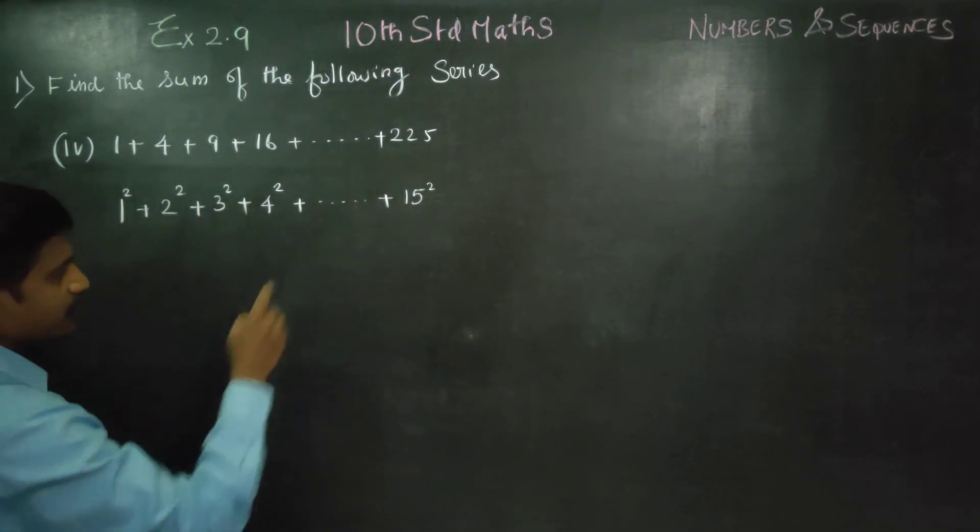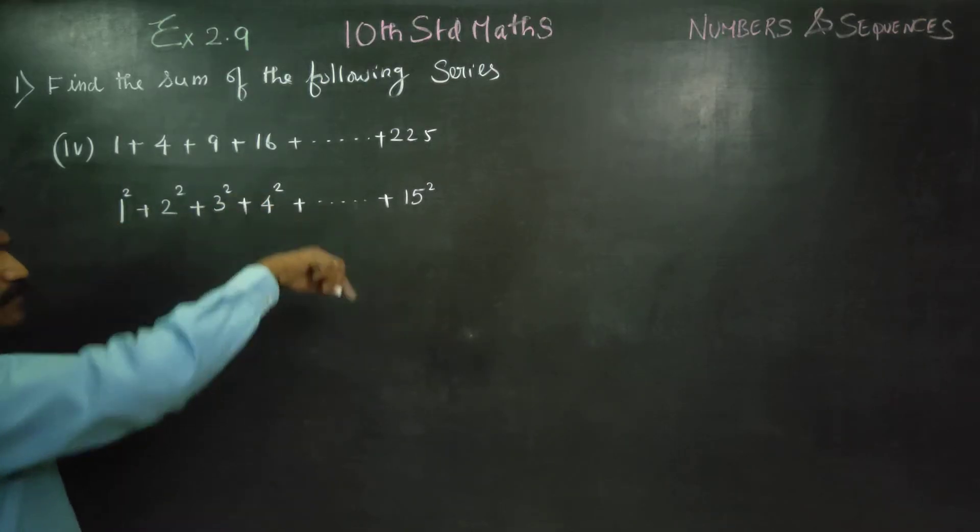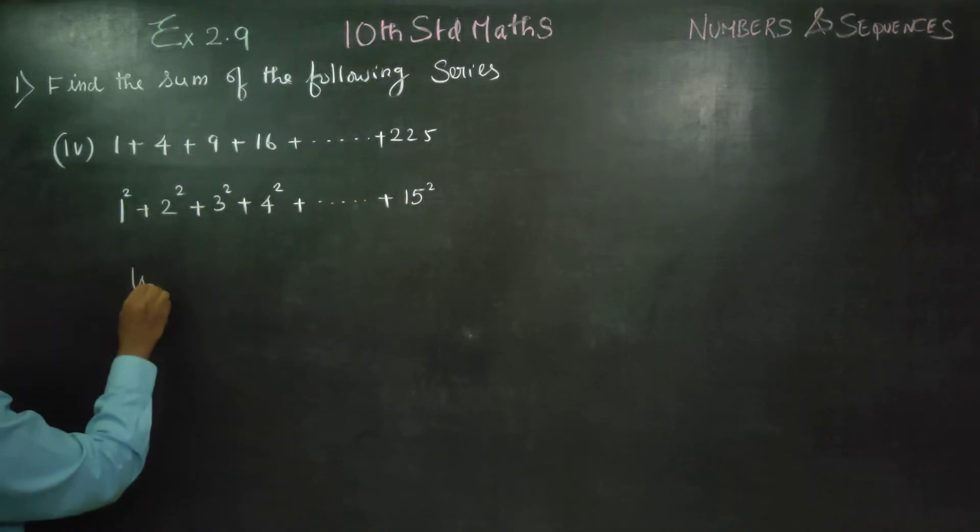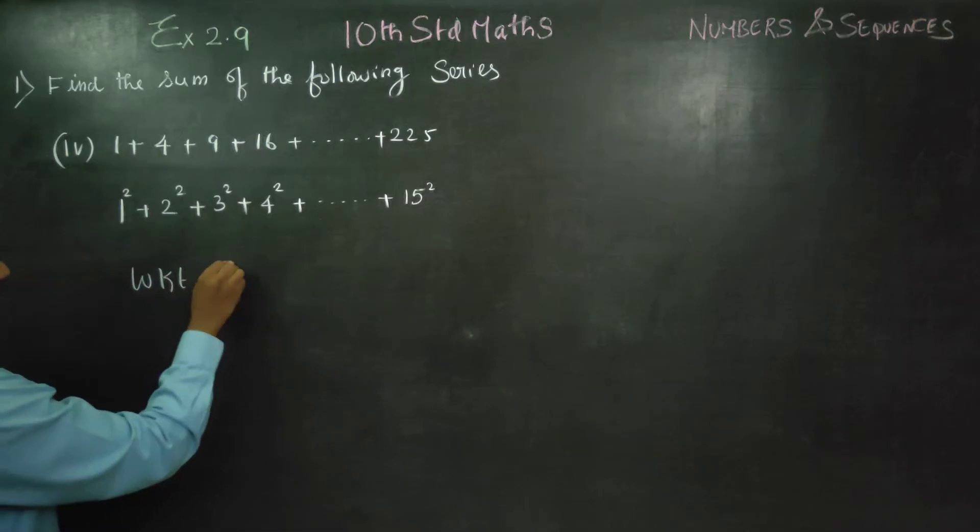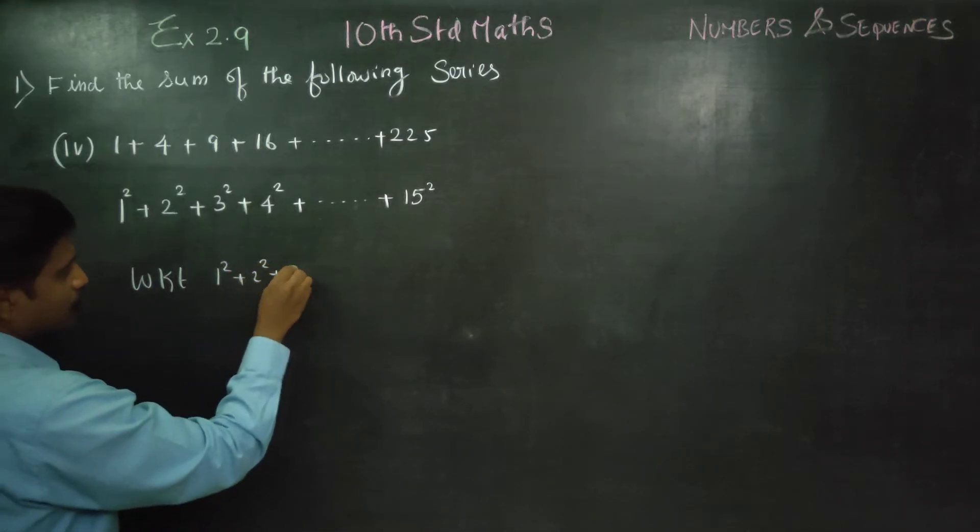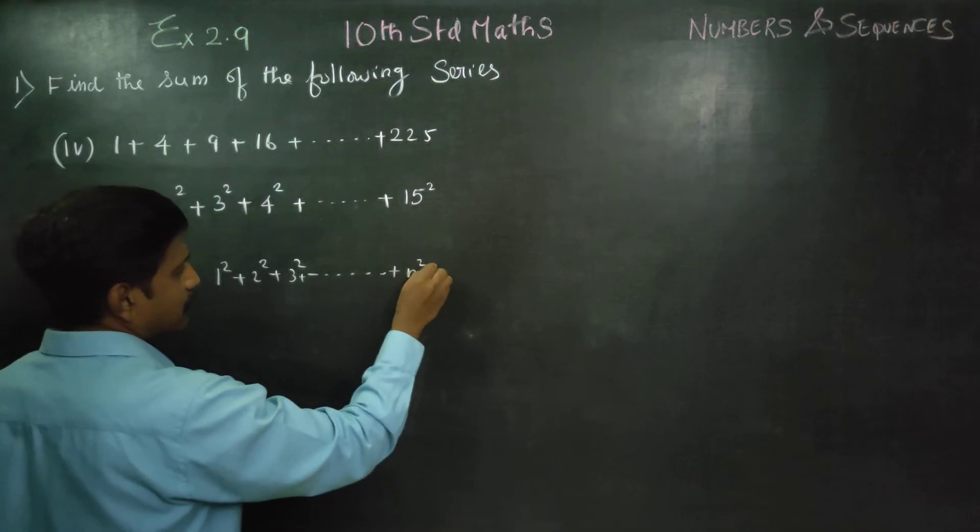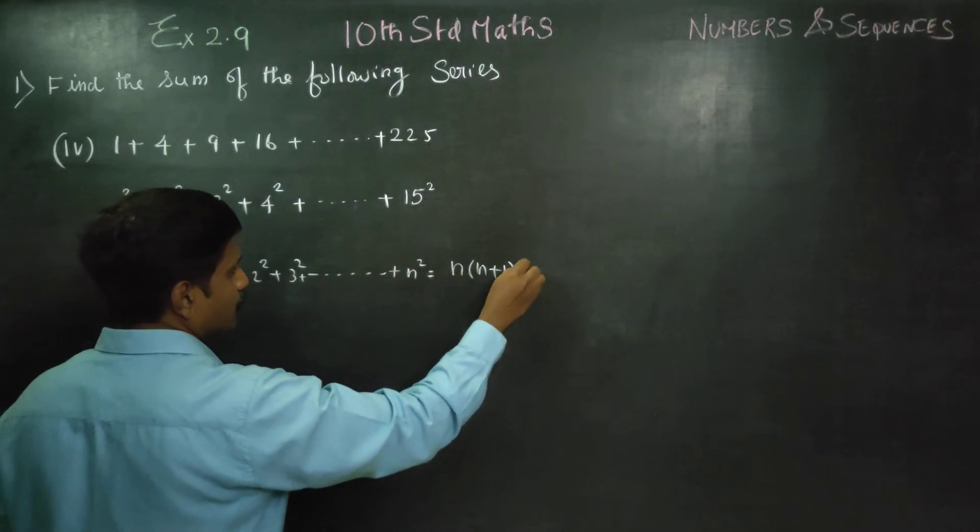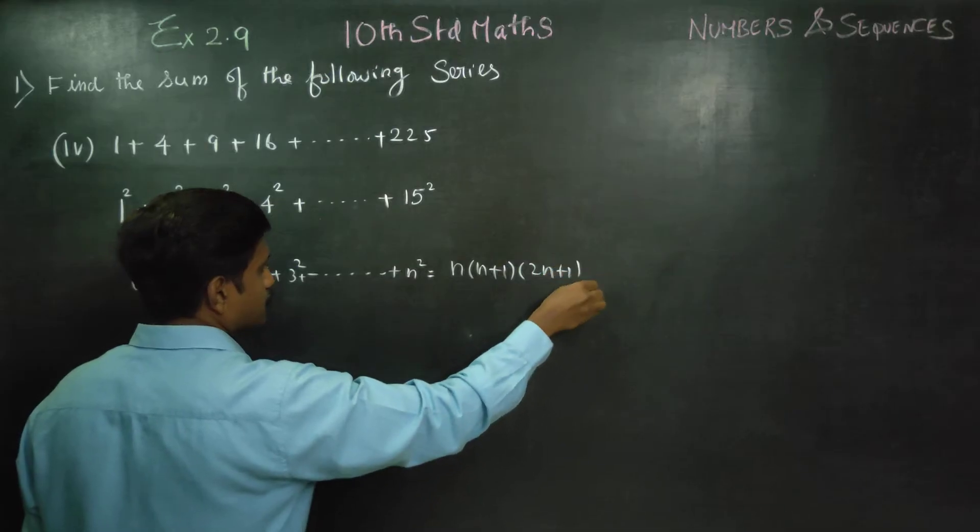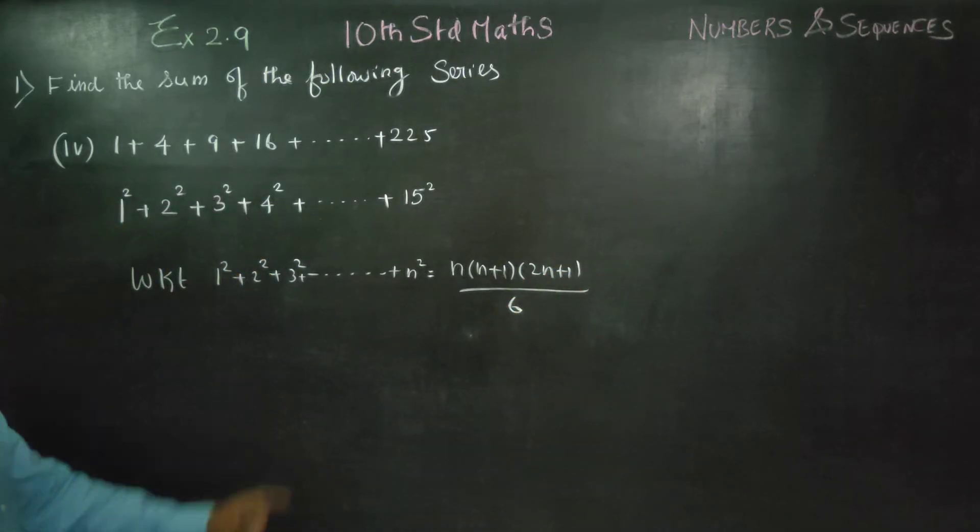Sum of natural numbers - sum of the squares of the natural numbers. We know that 1 squared plus 2 squared plus 3 squared dot dot dot up to n squared, this is the formula: n into n plus 1 into 2n plus 1 by 6. This formula is used.